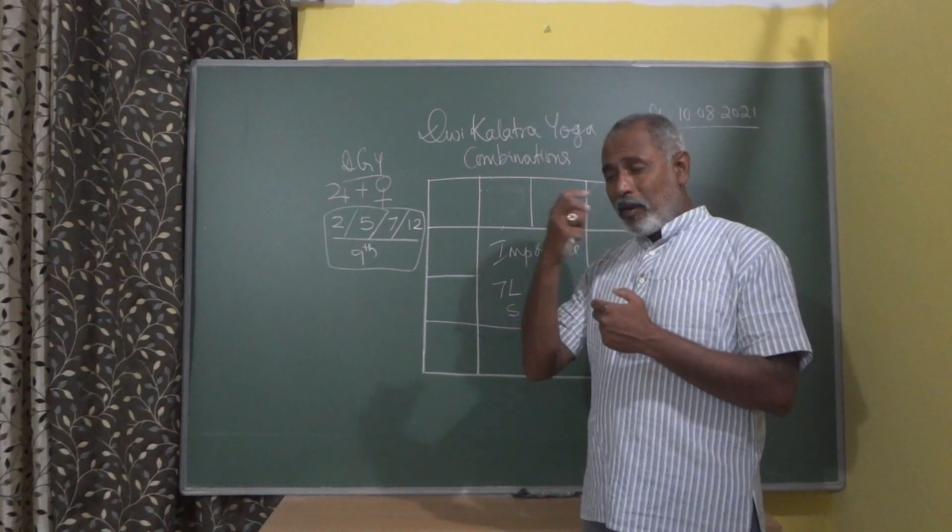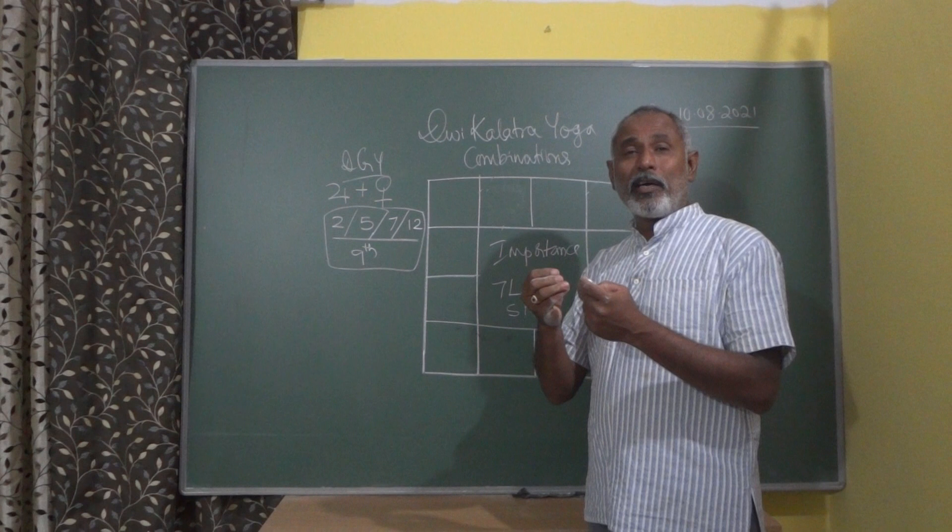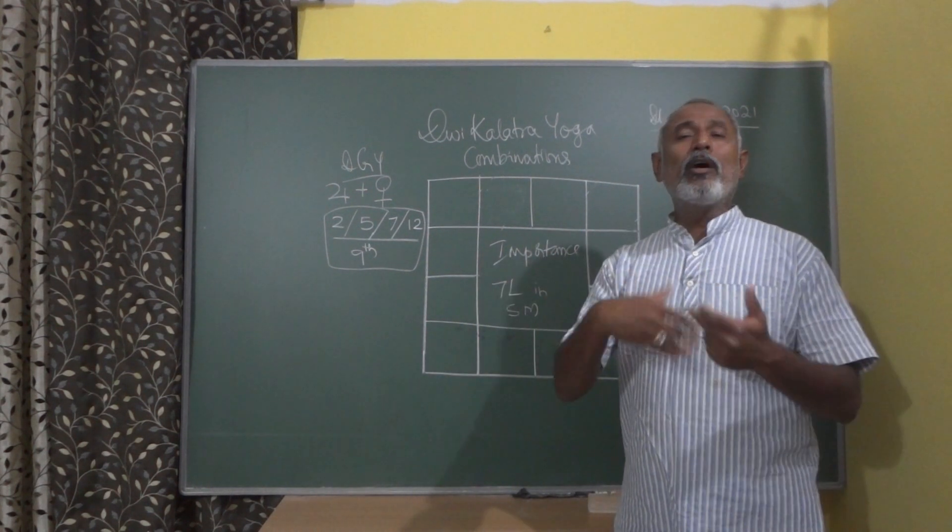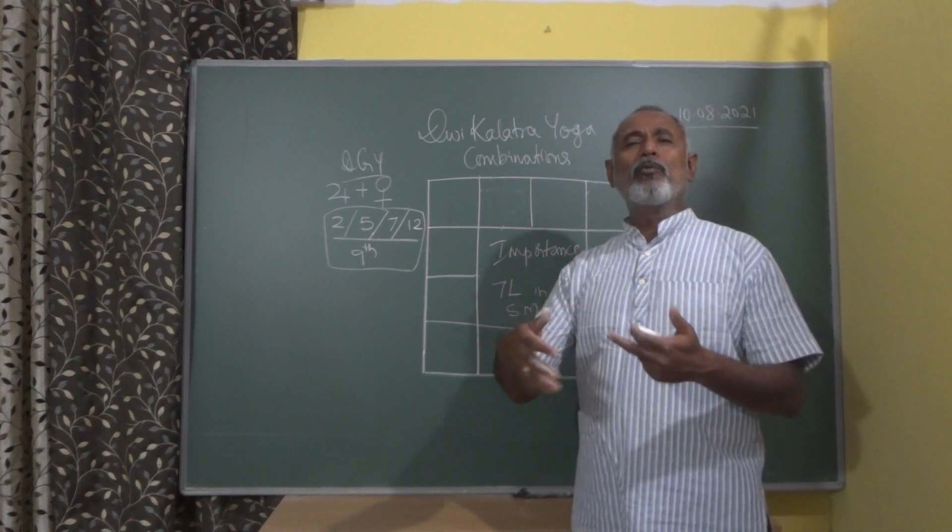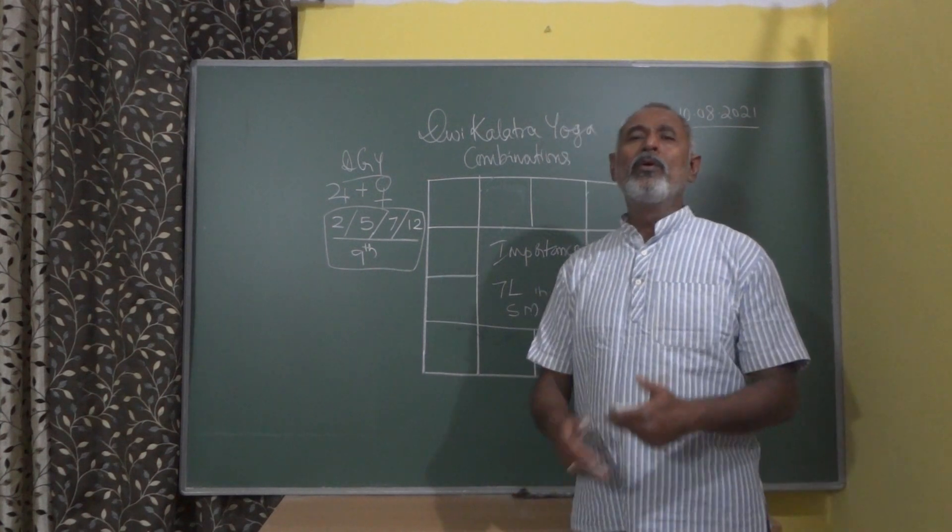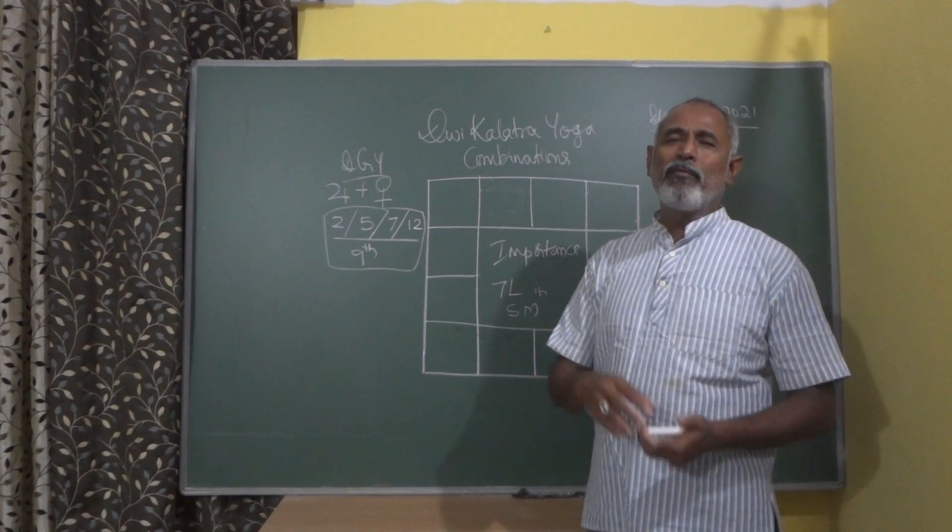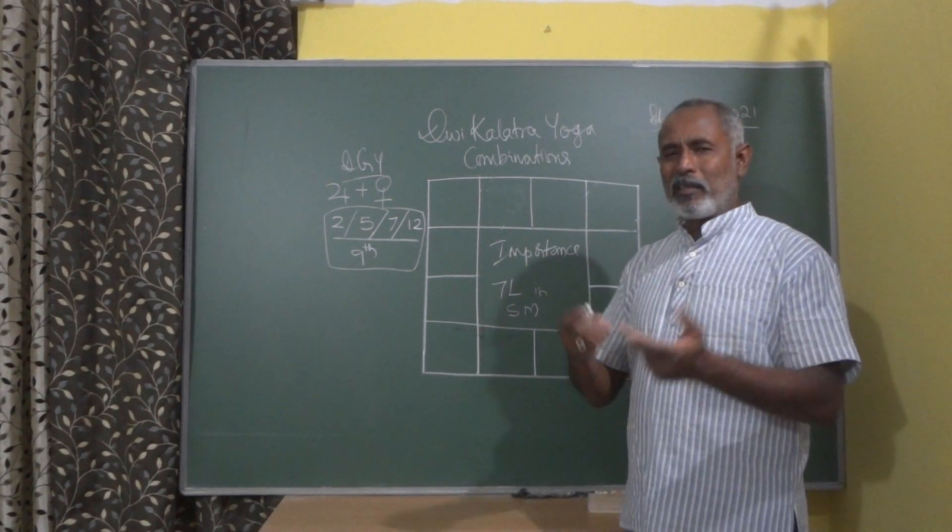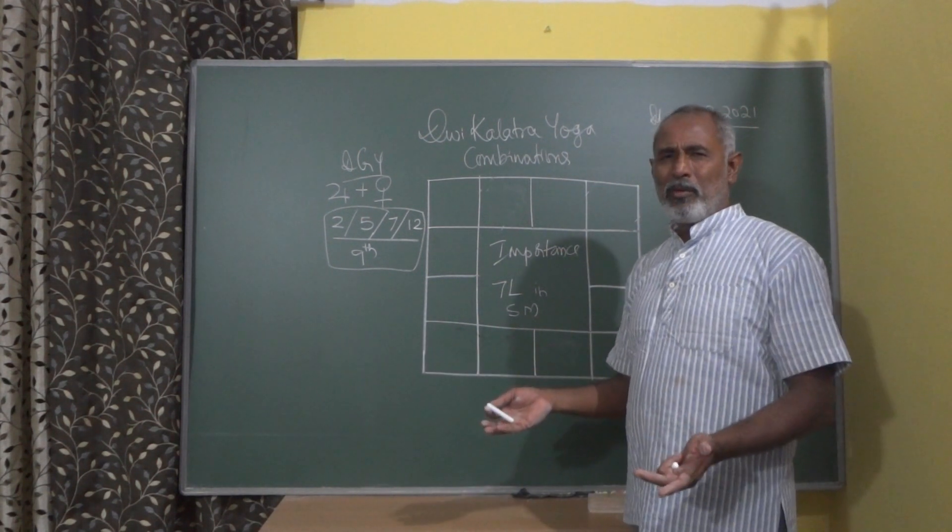So that means when planets are associated, you have more associations with the opposite gender or the person whom you would fall in love with or you would get attracted to. There are many charts with me where the like genders also get attracted. So it is there. It is a common thing now.